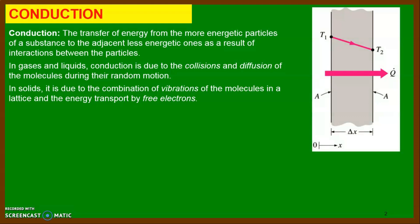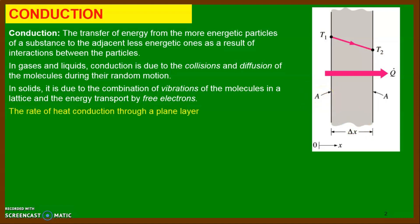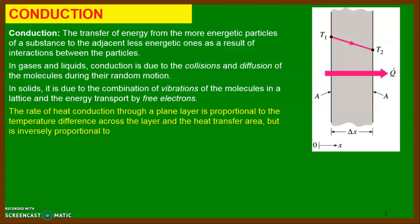Let us understand conduction in one solid bar with the help of this figure. You can see the temperature on one side of the bar is T1 and on the other side the temperature is T2, where T1 is greater than T2. It means heat is transferred from the T1 side to the T2 side. The bar has a thickness of delta x and a cross-sectional area A. The rate of heat transfer through the plane layer is directly proportional to the temperature difference across the layer and the heat transfer area, but inversely proportional to the thickness of the layer.